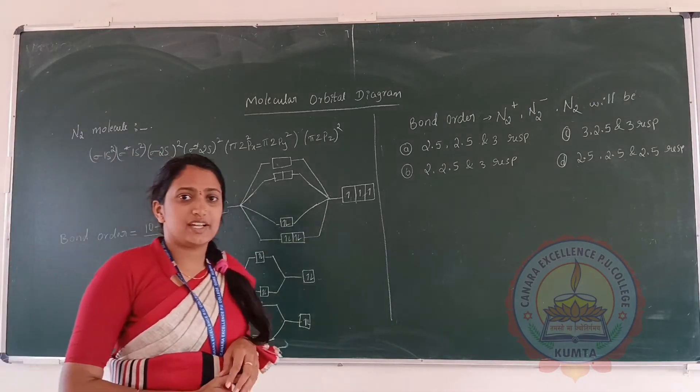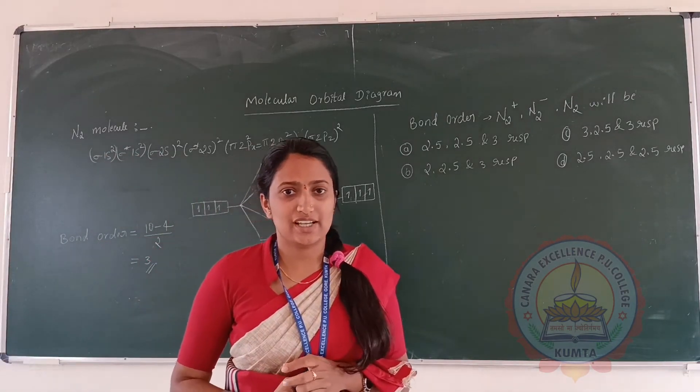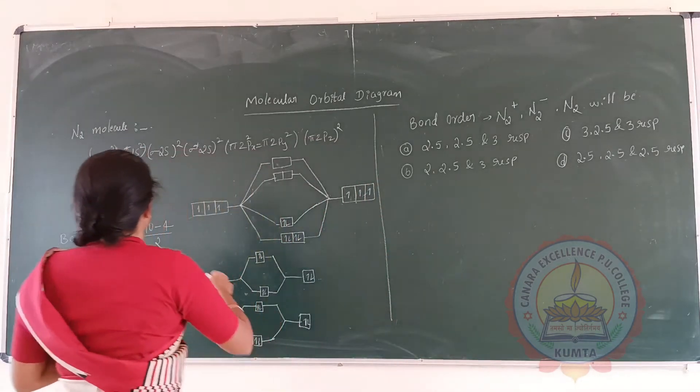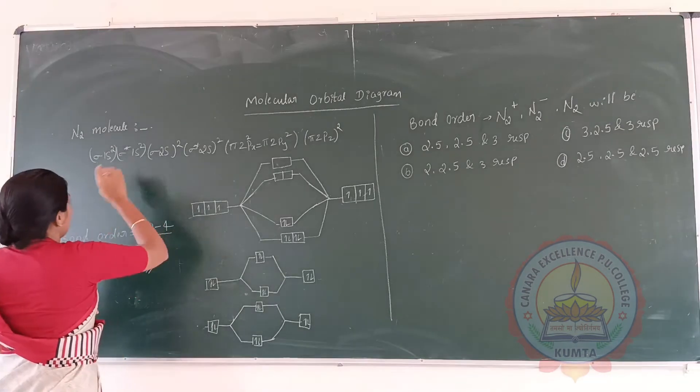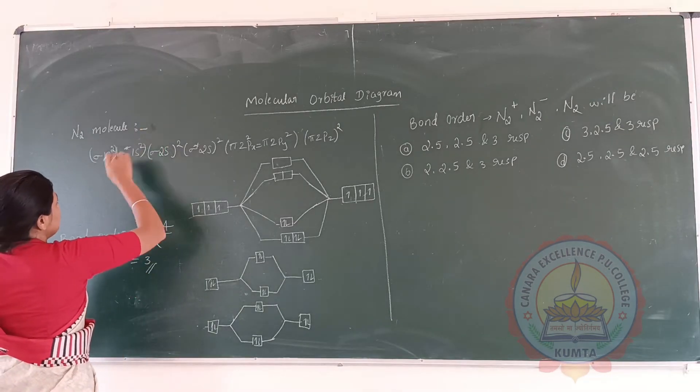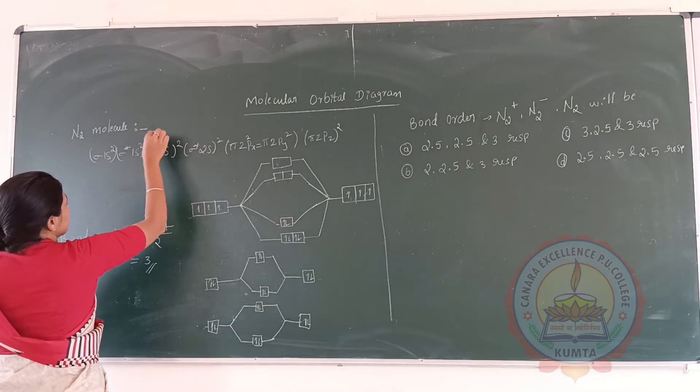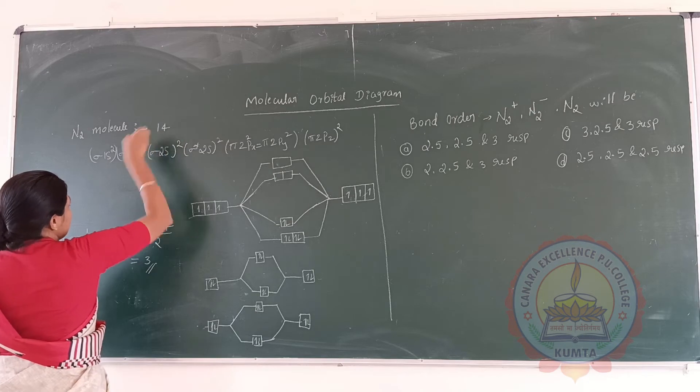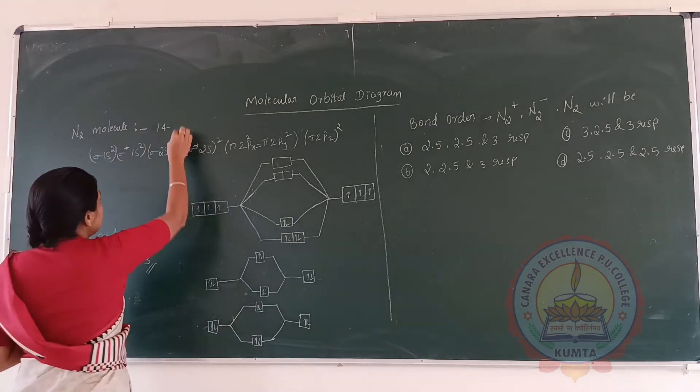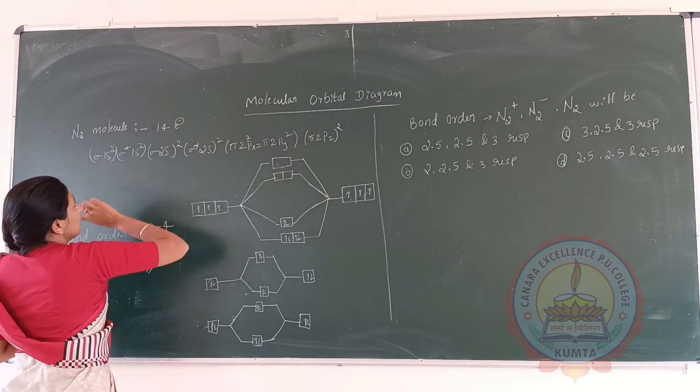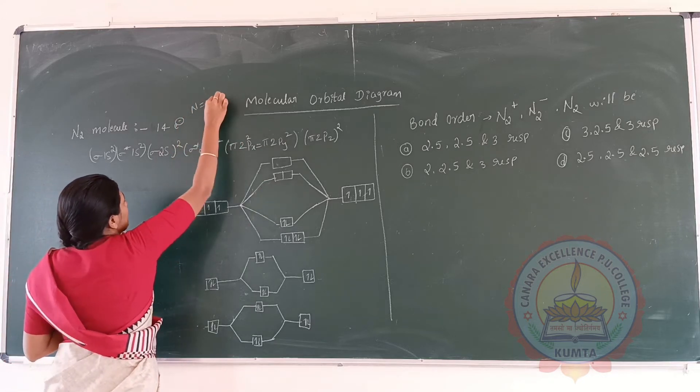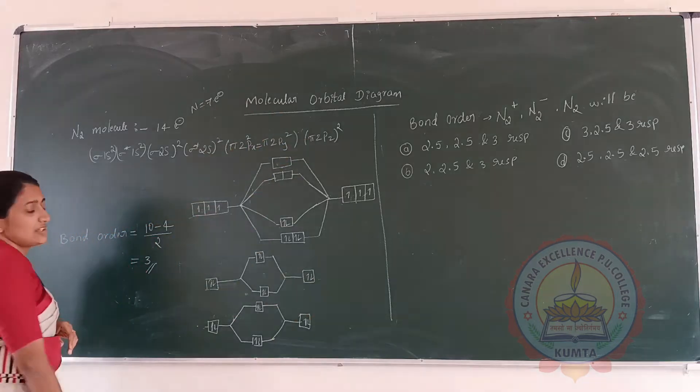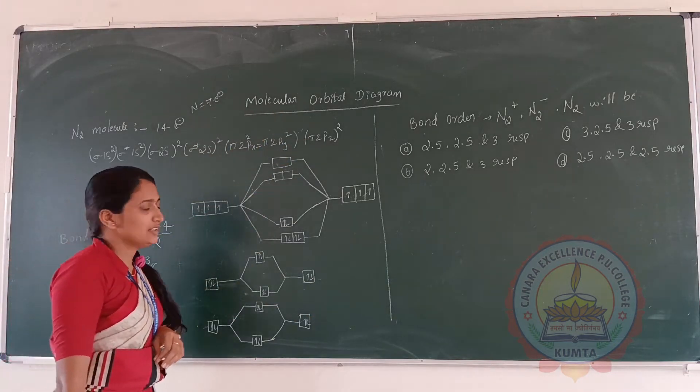First look at the N2 molecule. How to solve this N2 molecule in our regular classes? We solve, first we get the electronic configuration of N2. N2 molecule has 14 electrons total - 7 electrons from each nitrogen atom.